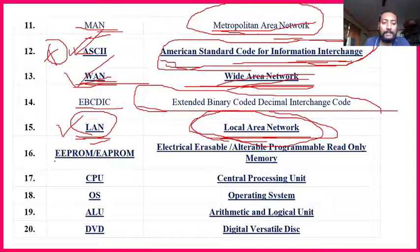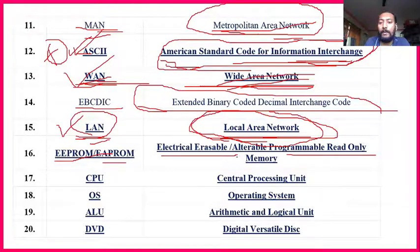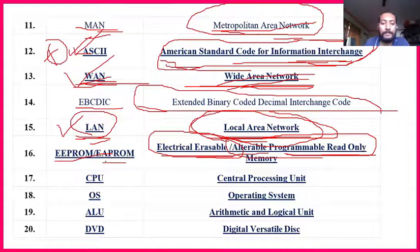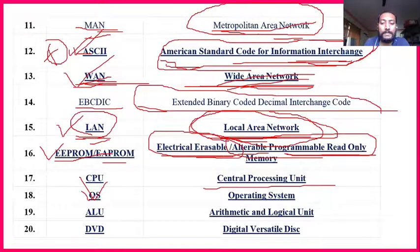EEPROM — already discussed — Electrically Erasable Programmable Read Only Memory, or alternatively Alterable Programmable Read Memory. You can electrically erase or delete that data. CPU — Central Processing Unit — very important. OS — Operating System — is important. ALU — Arithmetic and Logical Unit — already discussed, it is inside the CPU.